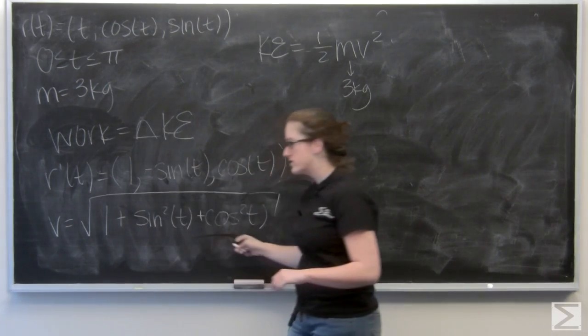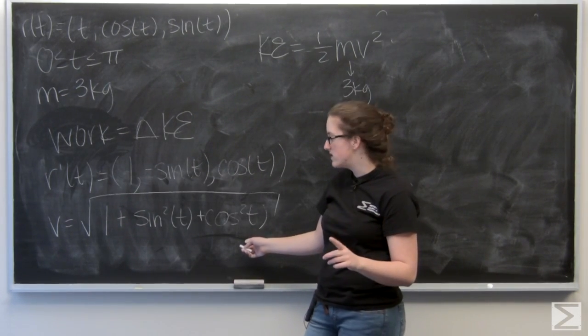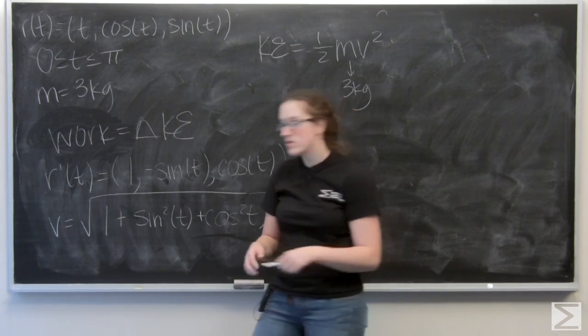Well, this is our favorite trig identity. That's going to be 1. So, my velocity is actually a constant and it's the square root of 2.